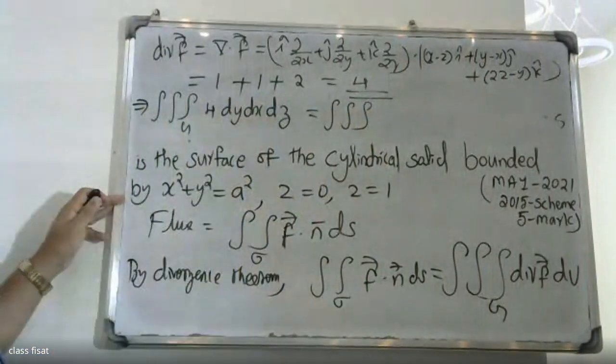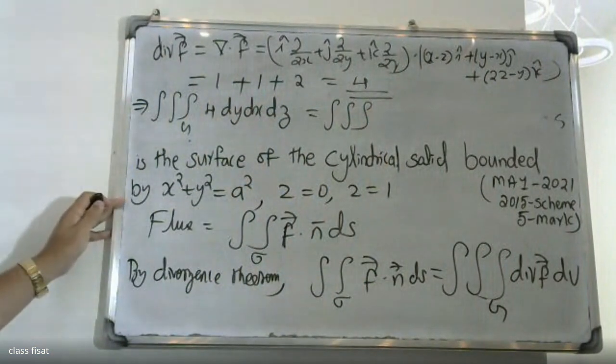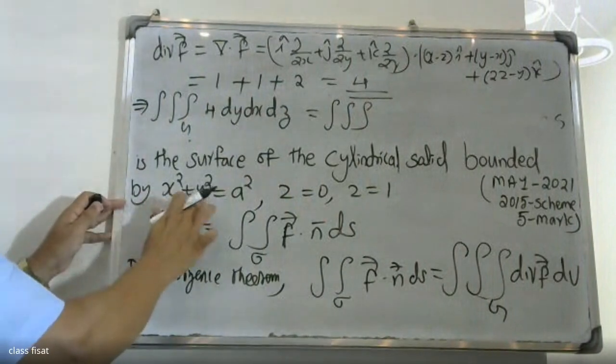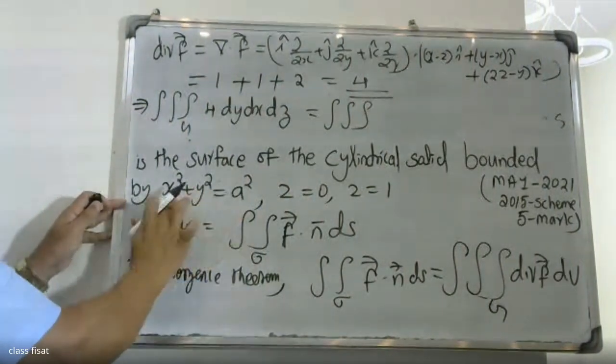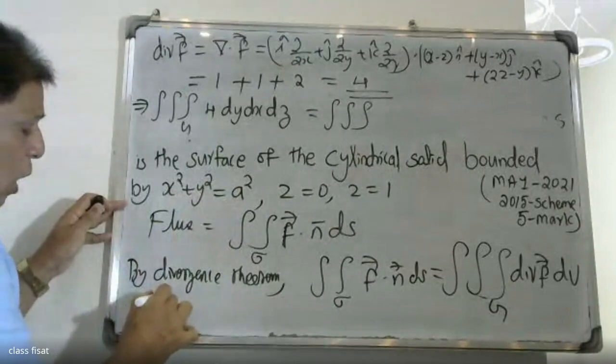The region is bounded by x squared plus y squared equal to s squared, so the limits for x run from minus s to plus s, and for y from minus root of (s squared minus x squared) to plus root of (s squared minus x squared).